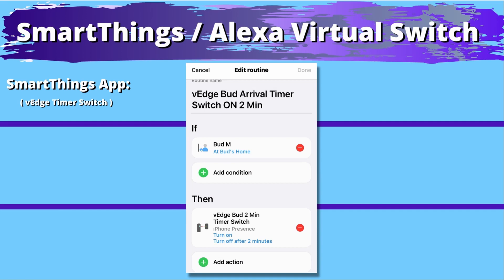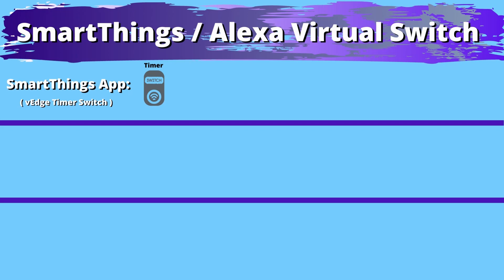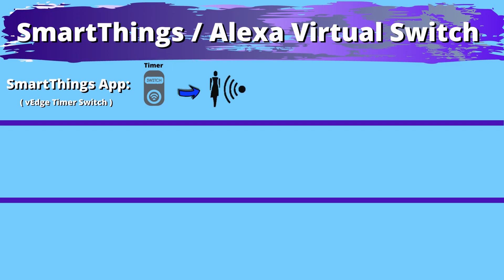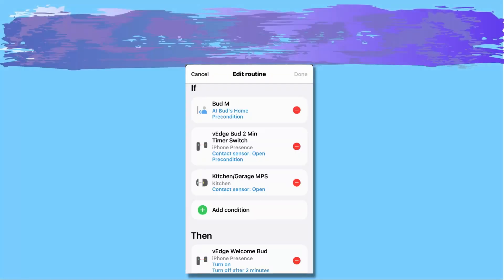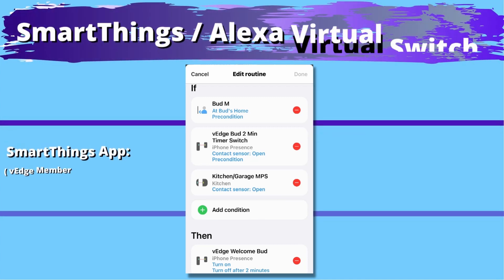This is the first of two routines — the V-Edge arrival timer switch routine. This routine starts whenever my presence is detected at home. The switch starts in an off state, then the SmartThings Home Monitor detects my presence. With that detection, the switch is turned on and a two-minute timer starts. This switch length can be any time that you want. When the timer ends, it will turn off that timer switch. The next routine is the V-Edge member arrival switch, which turns on whenever three things happen: my arrival is detected, the timer switch is on, and the kitchen door sensor is opened.